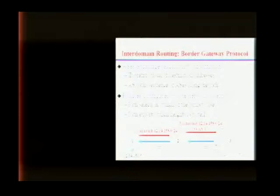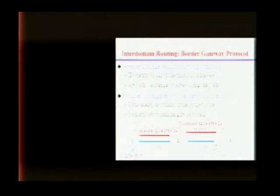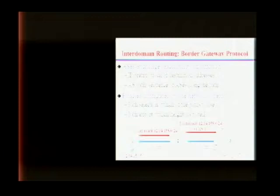BGP is an unusual protocol — a path vector, policy-based protocol. Autonomous systems exchange information about what destinations they can reach and what path they are using to reach that destination. Routes are advertised at the level of address blocks, around 200,000 today. A domain will advertise that it's able to reach an address block, and if a neighbor picks that route as best, it'll send data traffic in the reverse direction. It also has the option of advertising that information onward, adding itself at the front of the path.